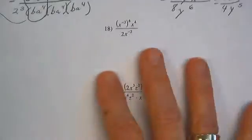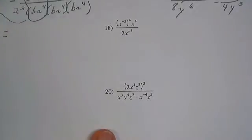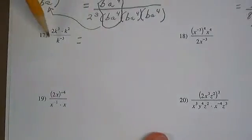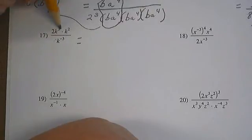Problem 17: 2k cubed times k squared over k to the negative 3. Remember what we said about a negative exponent in the denominator? We can move it from here to here and change the sign.